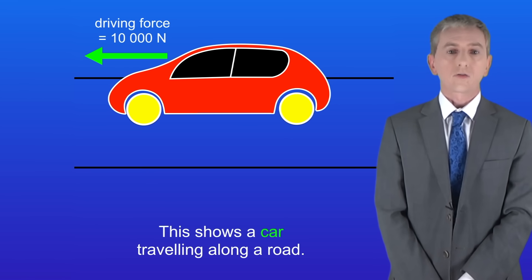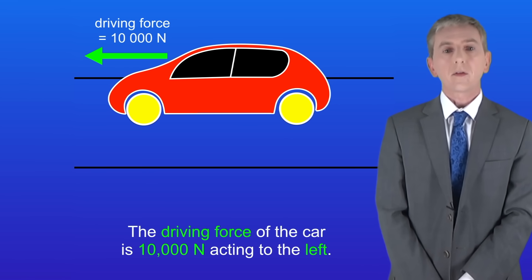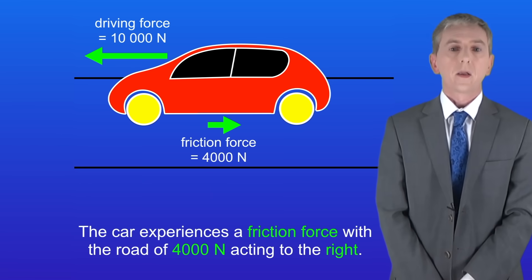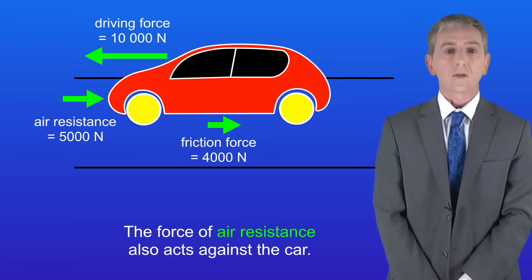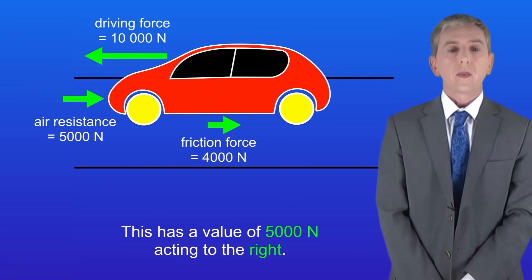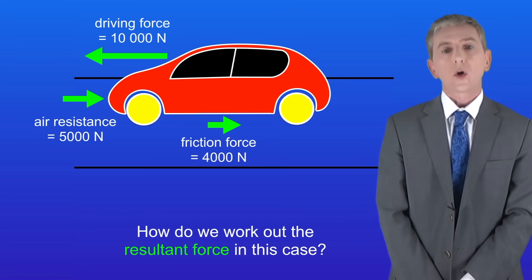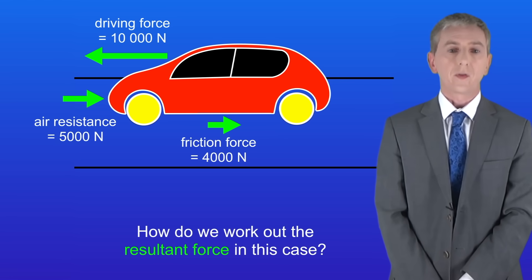Okay, this shows a car traveling along a road. The driving force of the car is 10,000 newtons acting to the left. The car experiences a friction force with the road of 4,000 newtons acting to the right. The force of air resistance also acts against the car. This has a value of 5,000 newtons acting to the right. So how do we work out the resultant force in this case?